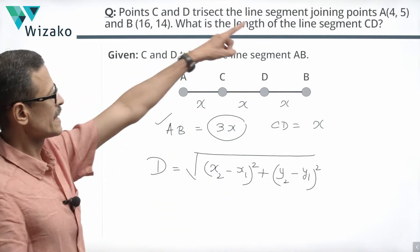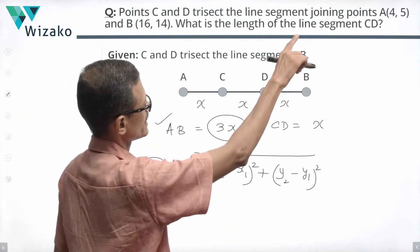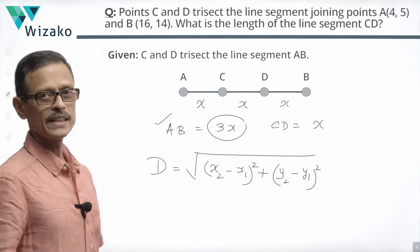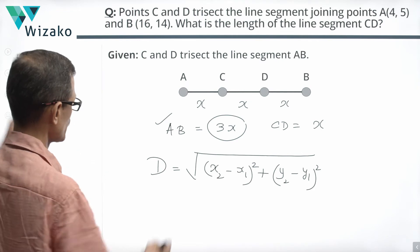So for us A coordinates are 4, 5 that is equal to X1, Y1. The coordinates of B 16, 14 are X2, Y2. Let's plug that in here.